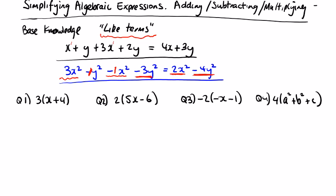We can call this removing brackets — that's what we want to do, we want to simplify the expression. There are two sums: 3 times x and 3 times plus 4, which gives 3x plus 12. Because these are not like terms, that is the correct solution. Similarly, 2 by 5x is 10x and 2 by minus 6 is minus 12. Fully finished.